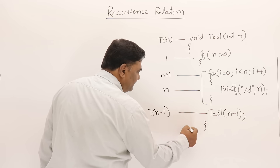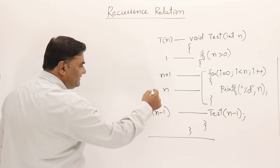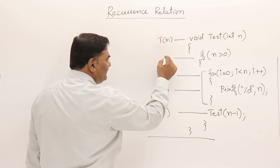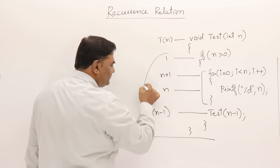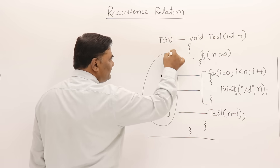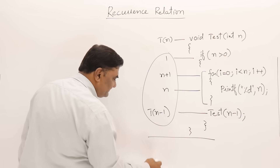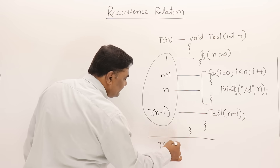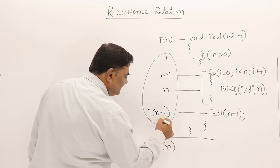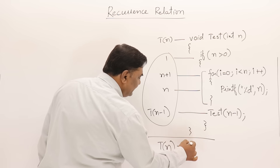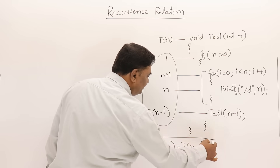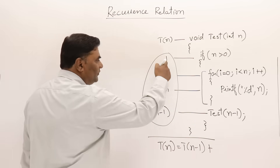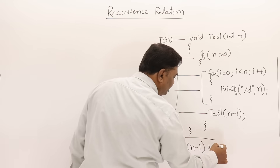The recursive call will execute for T(n-1) time. So what is the recurrence relation? If I write this, then T(n) equals the sum of all these: T(n) = T(n-1) + 2n + 2.